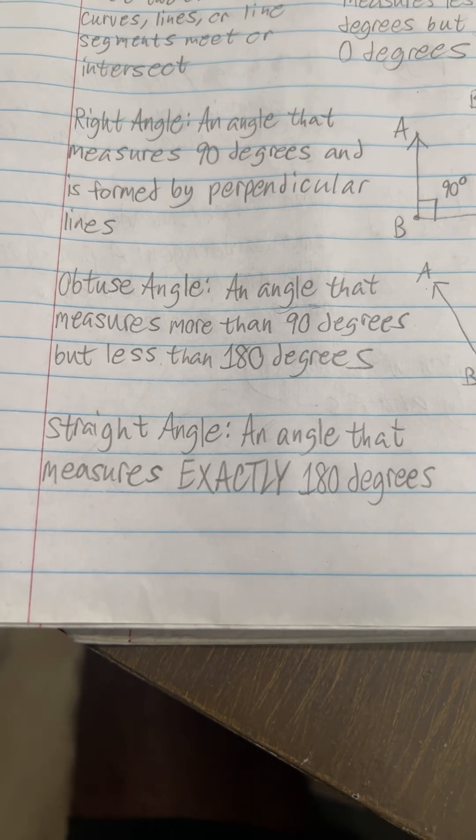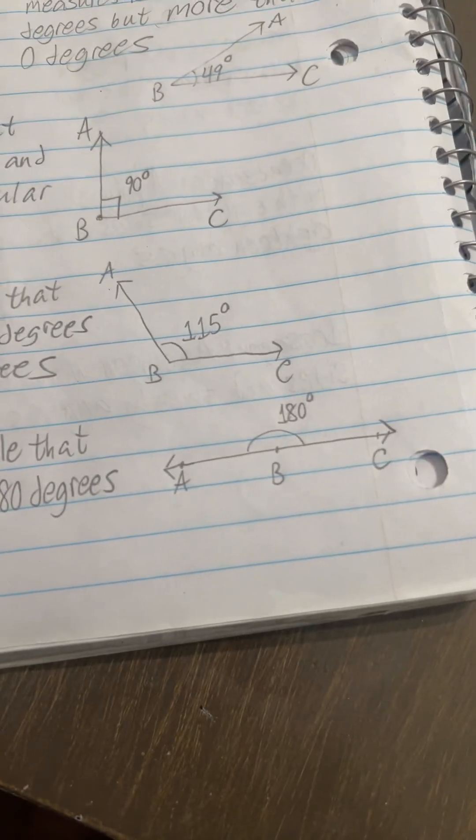A straight angle is an angle that measures exactly 180 degrees and it forms a straight line.